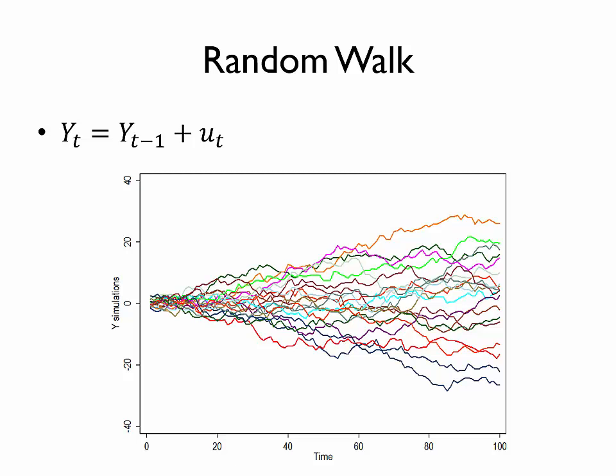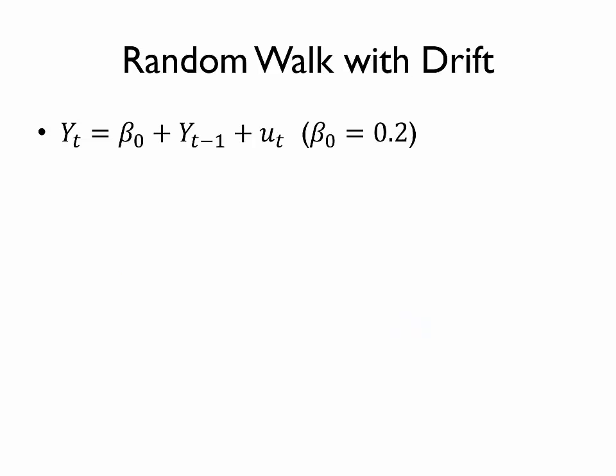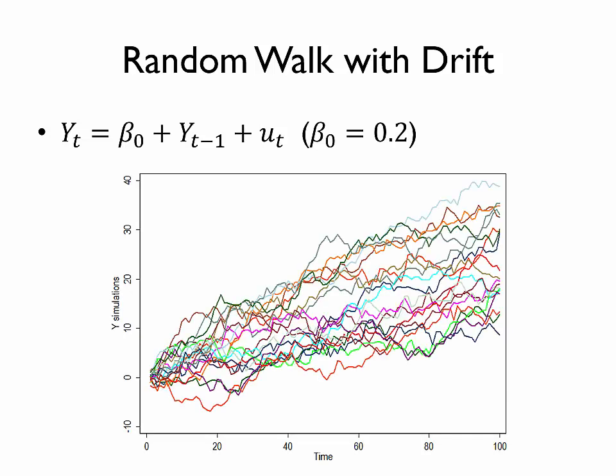So let's consider a variation on a random walk, specifically a random walk with drift. In this model, we have the same terms as before, but notice we've also added a beta 0 at the beginning. And I'm going to again simulate this, and I'll start by plugging in beta 0 is equal to 0.2. So here are the results. So a few things to notice. You probably first see that the time series tend to increase over time.